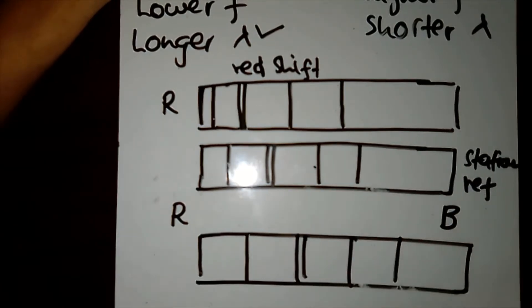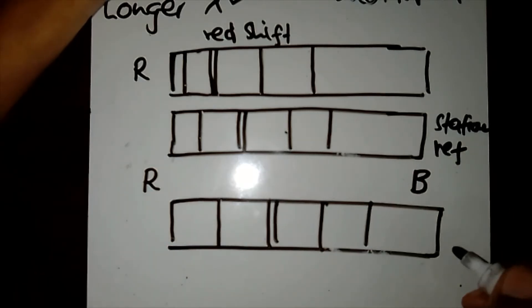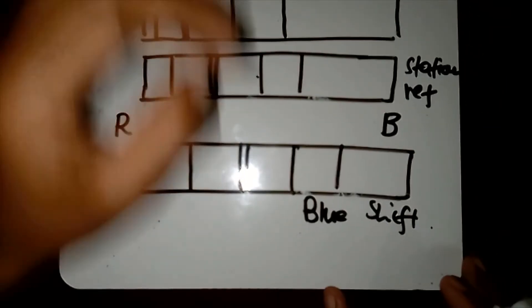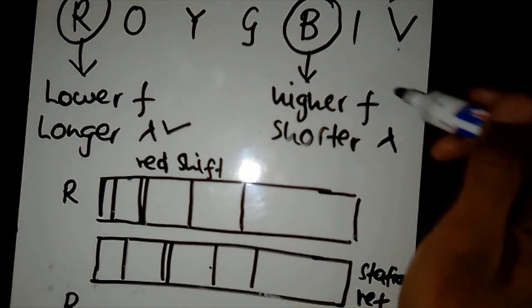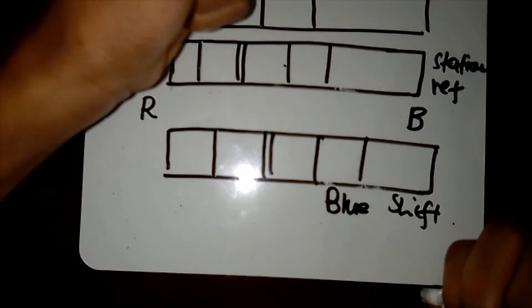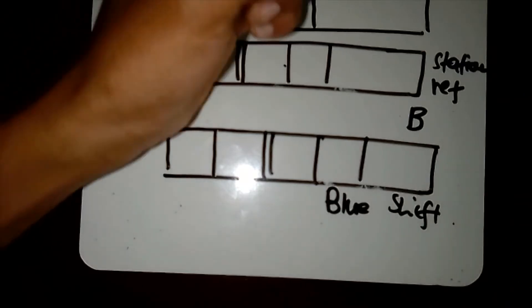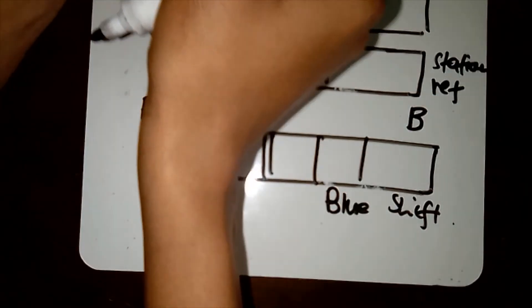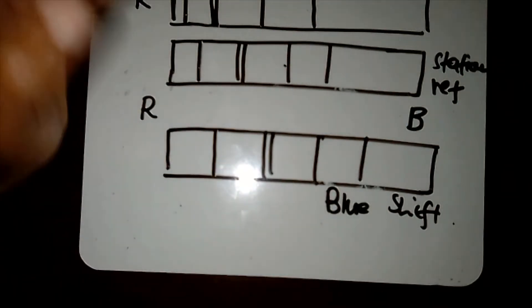Now let us compare another situation. We take another absorption spectra and compare it to the reference, and now we see that the spectral lines have shifted towards the right — towards the blue end. So we call this the blue shift, which is a shift towards higher frequency and shorter wavelength. If we observe a higher frequency, that means either the source or the listener is moving towards each other.